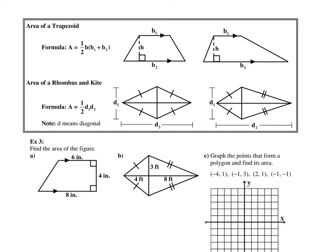We have some new area formulas. The area of a trapezoid is half the height times (base 1 plus base 2). For a trapezoid, the two parallel segments are your bases, and then you have your height. The area of a rhombus and a kite both use the same formula: half of diagonal 1 times diagonal 2.